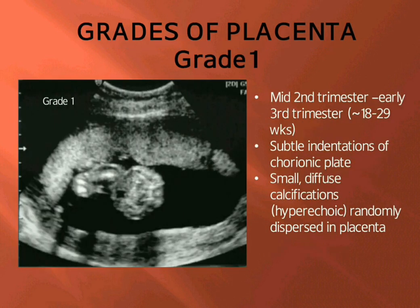Grade 1 appears in the mid-second trimester and early third trimester, between 18 and 29 weeks. There are subtle indentations of the chorionic plate and small diffuse calcifications, hyperechoic, randomly dispersed in the placenta.